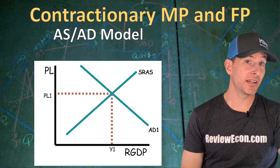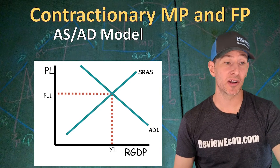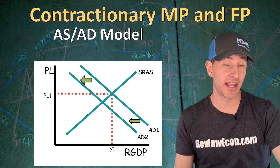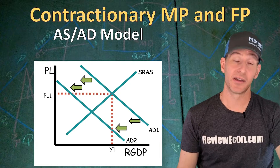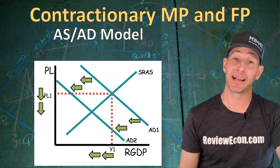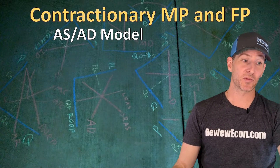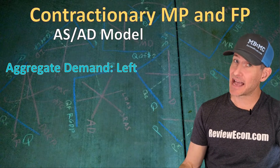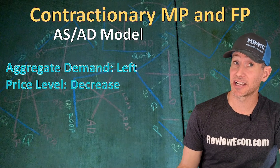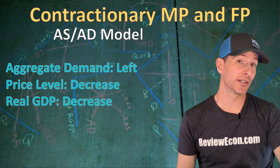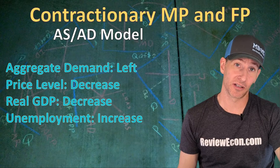If both monetary policy and fiscal policy are contractionary, in the AS-AD model we're going to see a leftward shift of aggregate demand with monetary policy and a leftward shift with fiscal policy. Both of those result in a lower price level and lower real output. That means aggregate demand definitely moves to the left — they have successfully fought inflation together — and we see real GDP decrease, which means higher unemployment or lower employment.